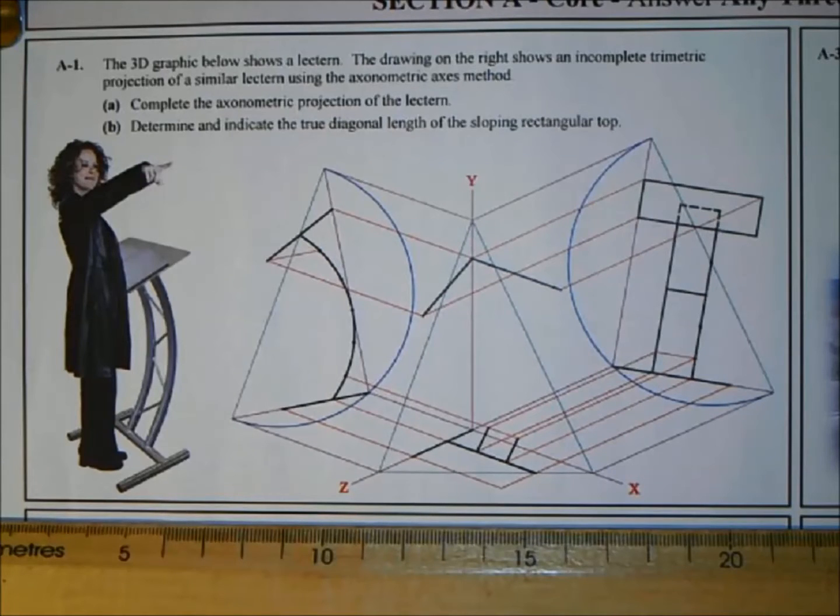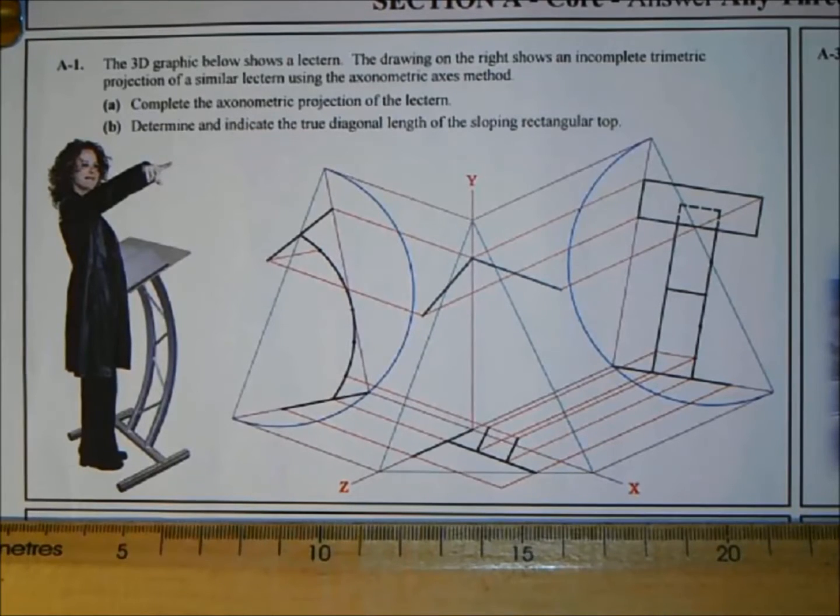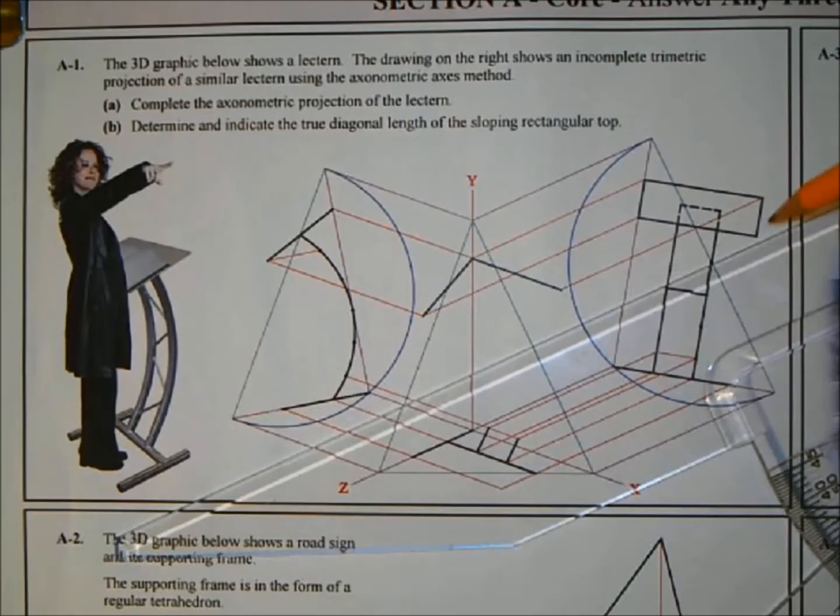Let's read through it. The 3D graphic below shows a lectern. The drawing on the right shows an incomplete trimetric projection of a similar lectern using the axonometric axis method. (a) Complete the axonometric projection of the lectern. (b) Determine and indicate the true diagonal length of the sloping rectangular top that's projected from the end view.